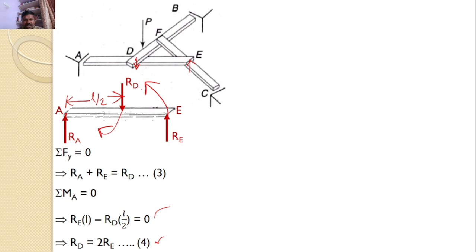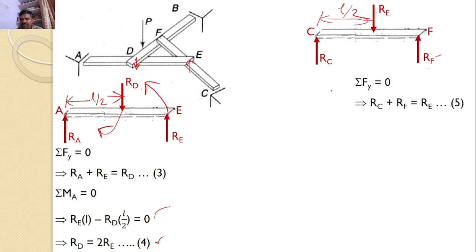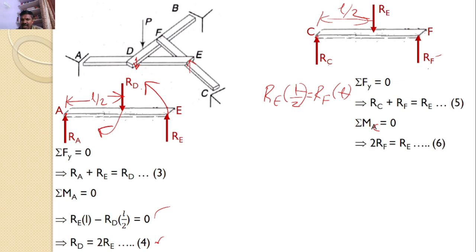Next, consider the last bar CF. At C, there is a support, and F is also a support. At E, another bar is placed, so the reaction at F is RF, the reaction at C is RC, and the force at E is RE. This distance is L/2. Applying sigma F_Y = 0: RC + RF = RE. Taking moments about C: RE × L/2 = RF × L, so RE = 2RF. This is equation 6.